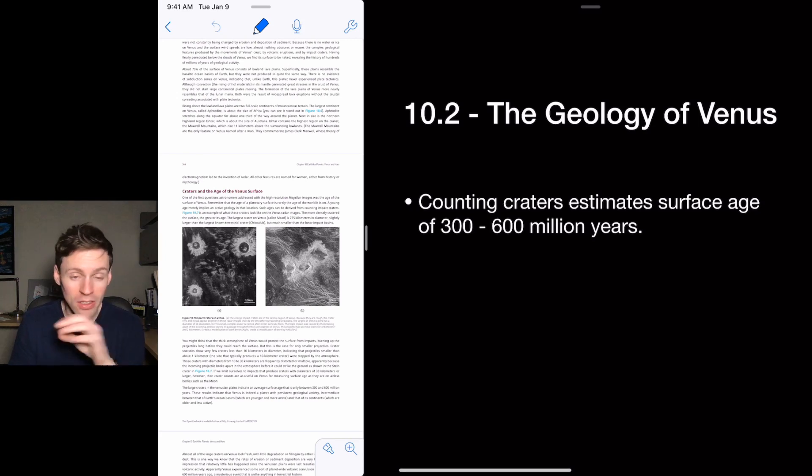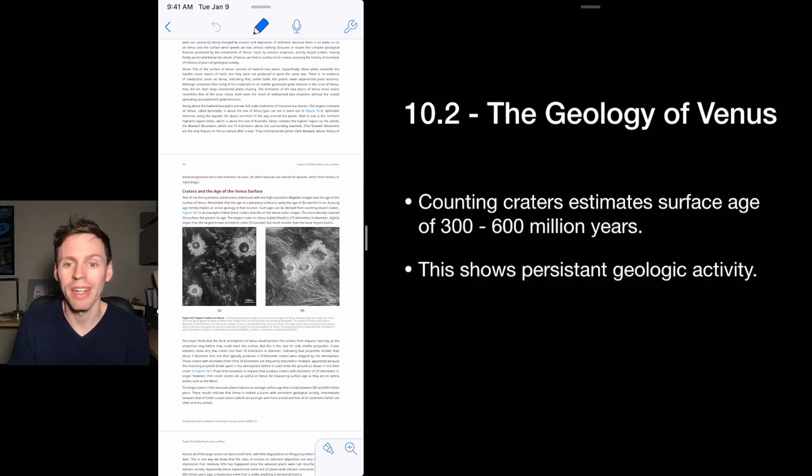By counting the craters and the sizes of them, we can see that actually most of the small comets get burned up by the Venus's thick atmosphere, but the larger ones make it through. And by estimating how many large, counting how many large craters there are, we can estimate that the surface is between 300 and 600 million years old, which means that Venus has a pretty active surface and has persistent geologic activity.